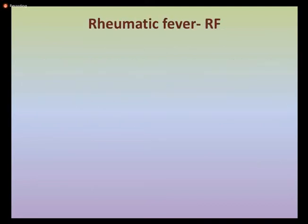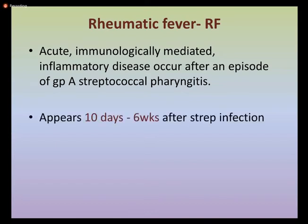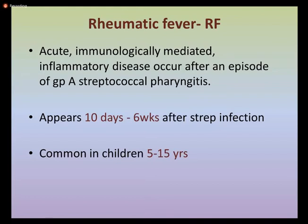First of all, what is rheumatic fever? Rheumatic fever is an acute immunologically mediated multi-system inflammatory disease which usually occurs a few weeks after an episode of group A streptococcal pharyngitis. It usually appears about 10 days to 6 weeks after streptococcal infection and is common in children aged around 5 to 15 years, but it can also occur in middle to later age.